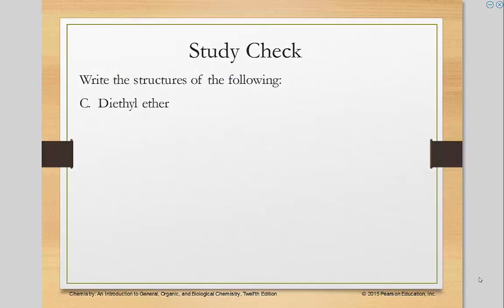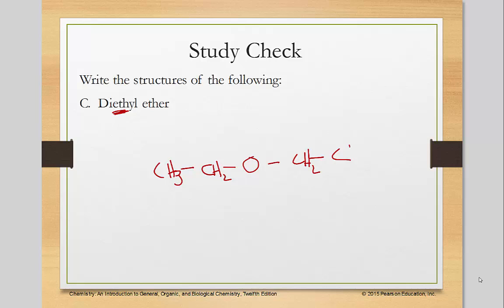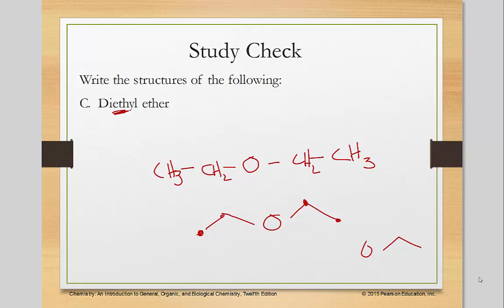Finally, let's do an ether — diethyl ether. We have oxygen in the middle, and I need two carbons on each side, which is why it's ethyl. Here's one side and here's the other: CH₃–CH₂–O–CH₂–CH₃. In skeletal format, here's my oxygen with a carbon on each side extending out. I'm drawing dots to help count where the carbons are, but the actual final skeletal format would not include those dots.